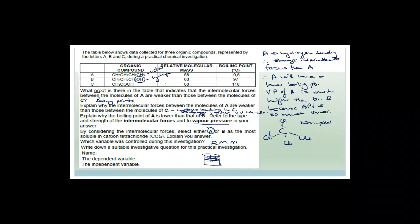A suitable investigative question would be: 'How does the structure of the organic compound affect the boiling point?' It's not the molecular mass that's changing. The dependent variable is the boiling point — the one we measure. The independent variable, the one we change, is the organic compound, because the relative molecular masses remain more or less the same but the actual organic compound changes.